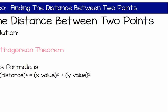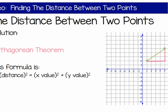Now, how do we use that? The formula looks like this: the distance squared is equal to the x value squared plus the y value squared.